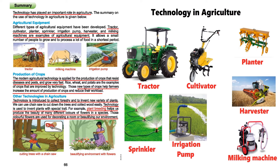Number two: the production of crops has increased due to technology. After inventing various kinds of technology in the agricultural sector, we can now produce a huge number of crops compared to before. In the days when technology was not available, we got only a small amount of agricultural items like food or crops. But nowadays, we can produce a huge number of crops on the same land with the help of this technology.